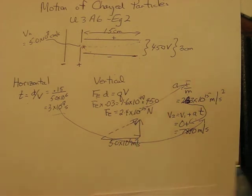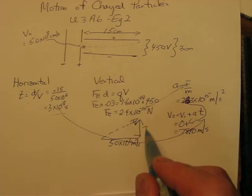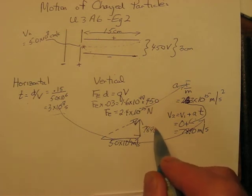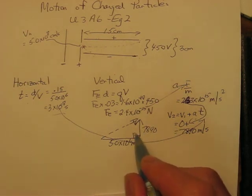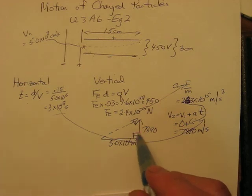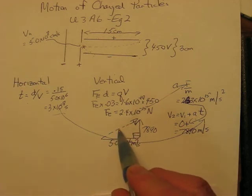The 7,890 meters a second goes here. You can complete the problem by using Pythagorean theorem to find out what that velocity is.